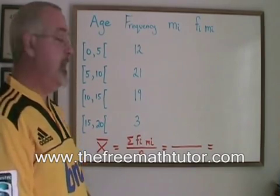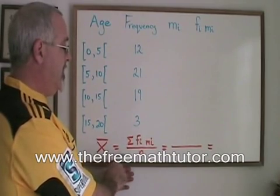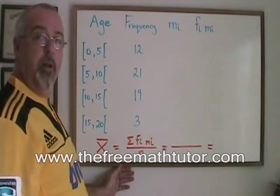When we are asked to find the mean of data that is grouped into classes, we use this formula: x-bar equals sigma fi mi over n.